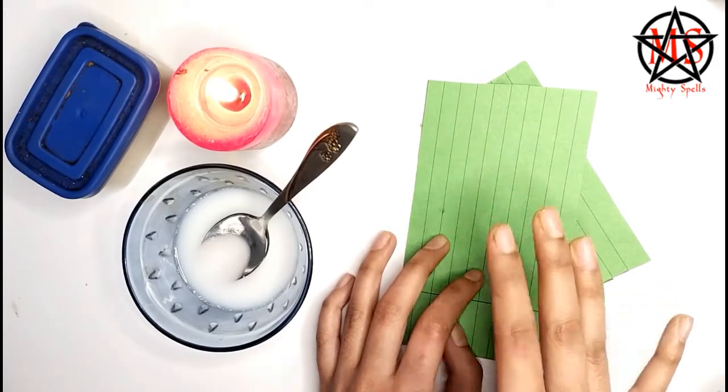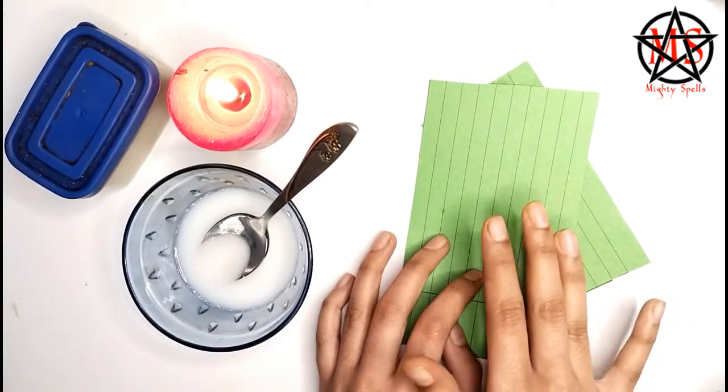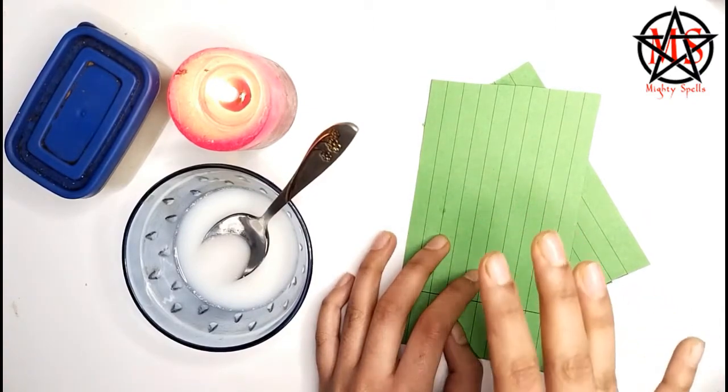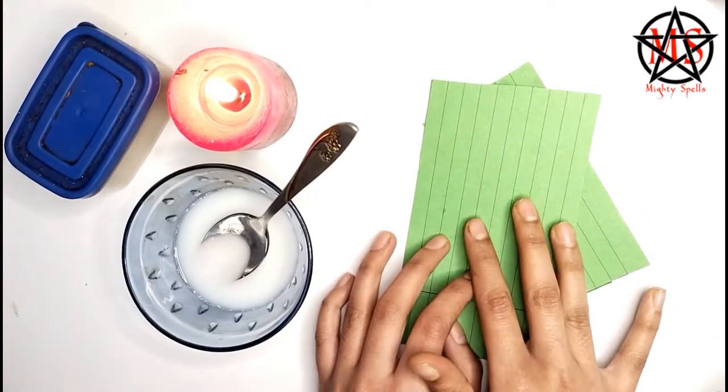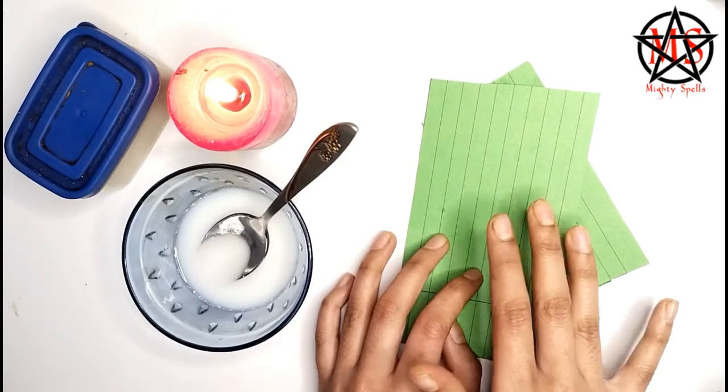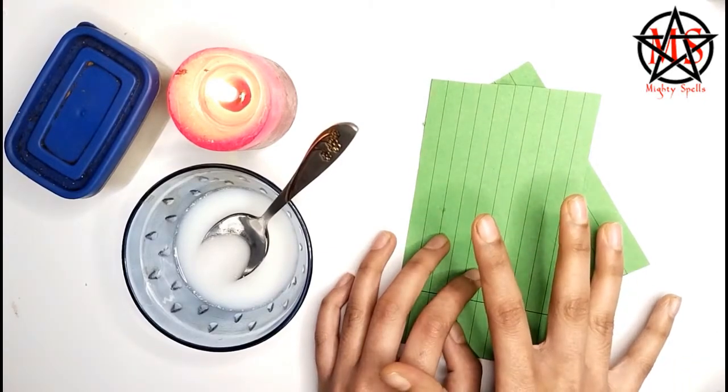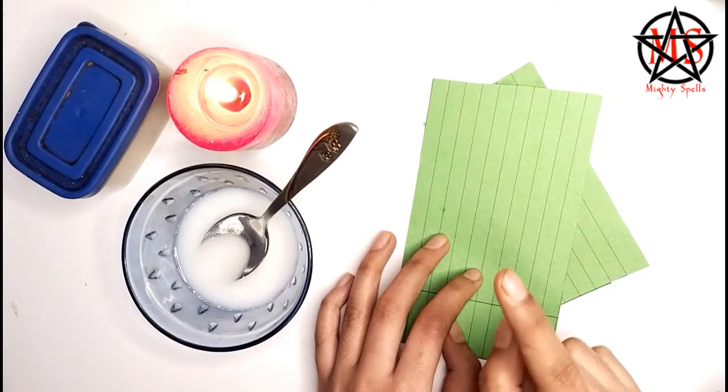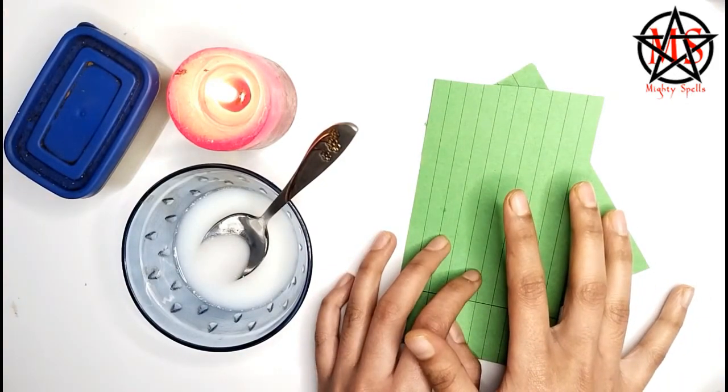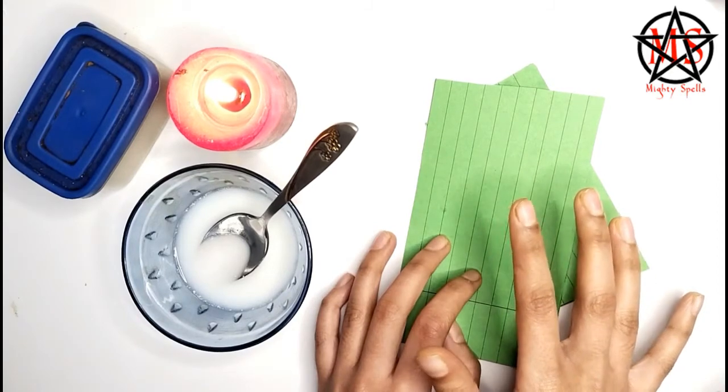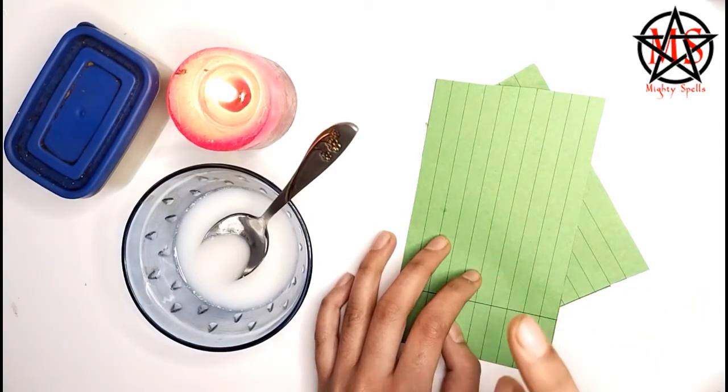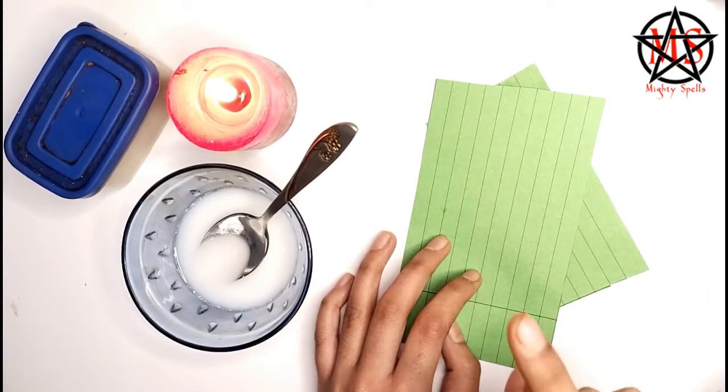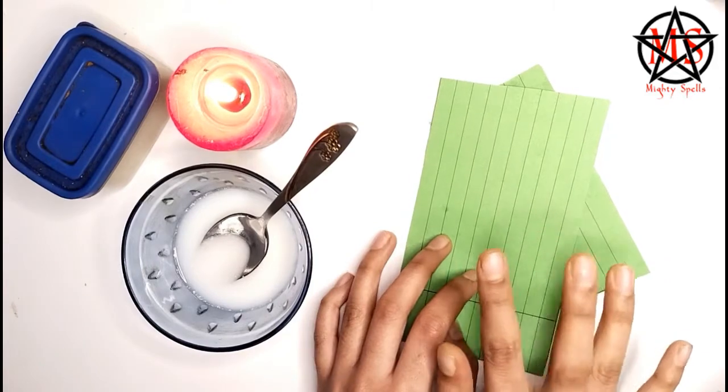So to do this spell, you need very simple material. You can find this material easily at your home and I want you to do the spell at 12 midnight so that you receive full results of this spell. So to do this spell, let me tell you what all you will require.